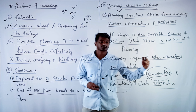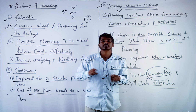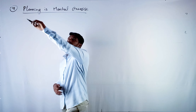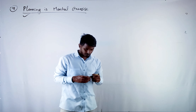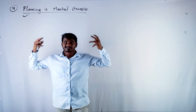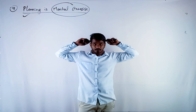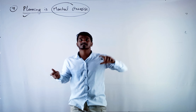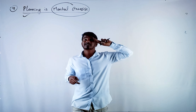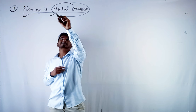This ends the sixth feature. The seventh feature is that planning is a mental exercise. While planning, you are using your brain and imagination. You need intelligence, imagination, and logical thinking. You should also be able to imagine and anticipate the future. That is the mental exercise involved in planning.